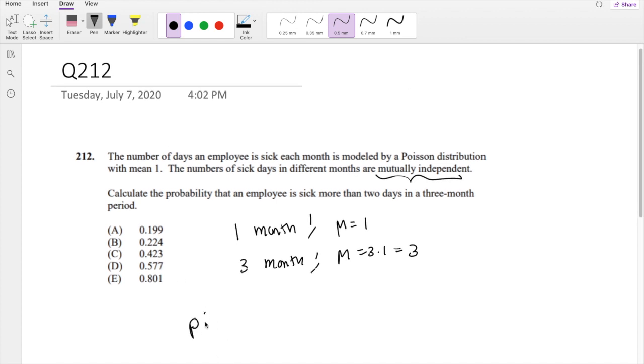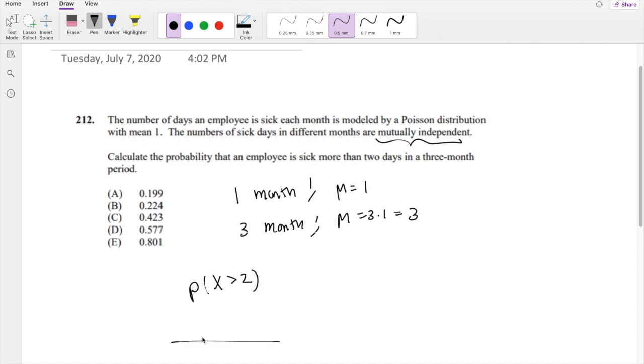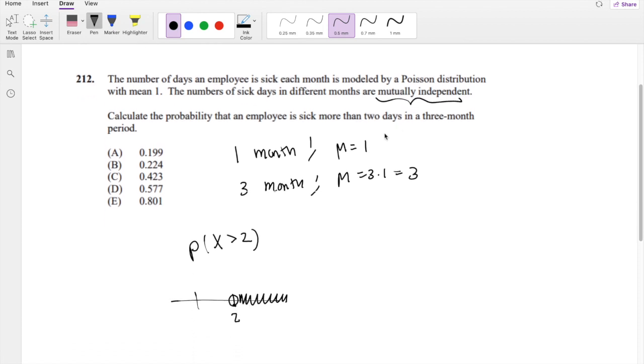So now we're looking for the probability that X is more than 2. That means if this is 2, we're looking at 2 and on. We can find 2, 3, 4, 5, 6, 7, 8, or we can always do the complement.